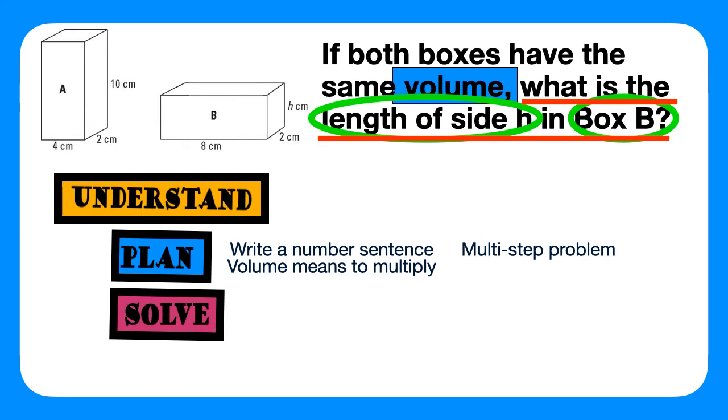First, we must find the volume of box A. 4 times 2 times 10. 4 times 2 is 8. And 8 times 10 is 80. So, the volume of box A is 80 cubic centimeters.